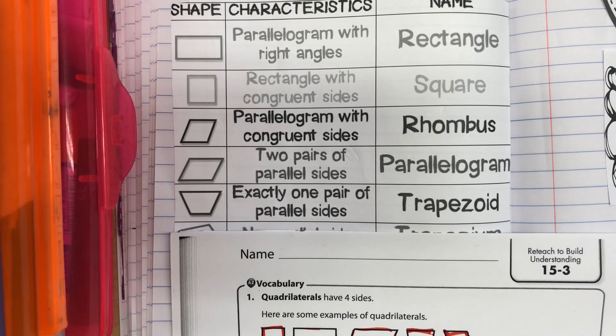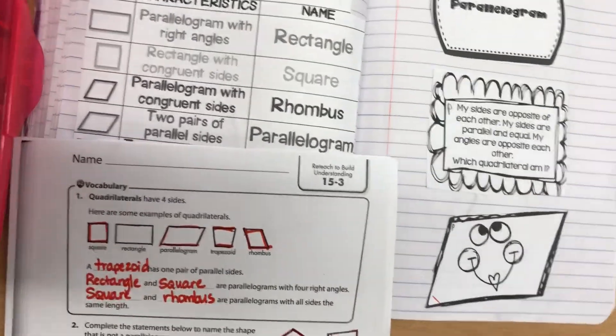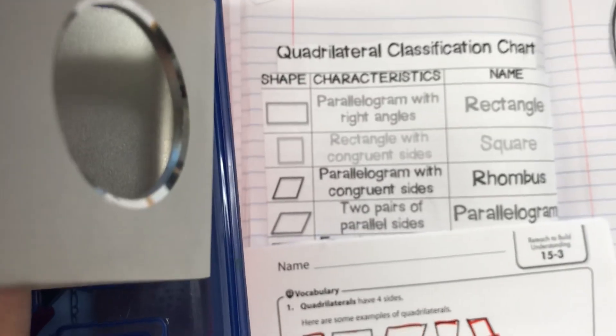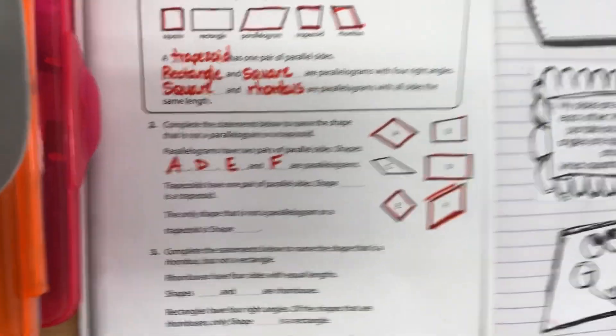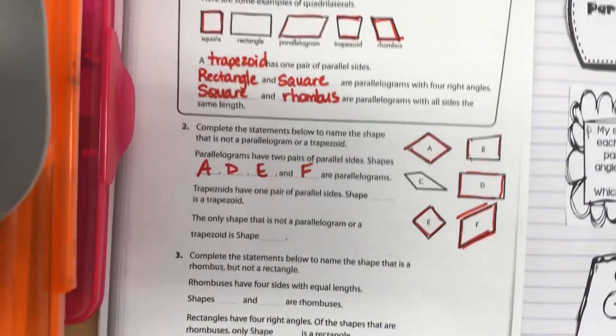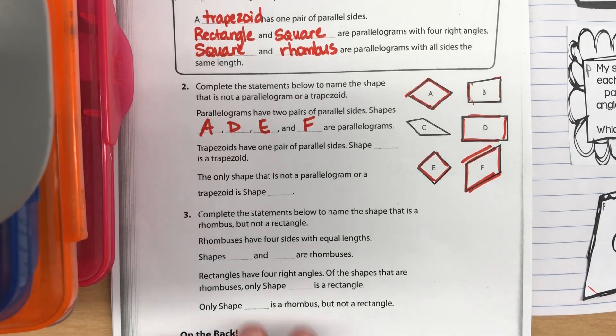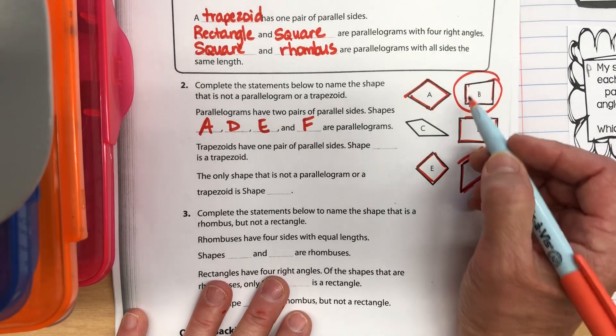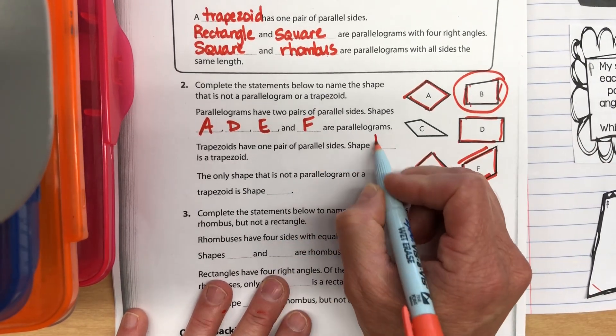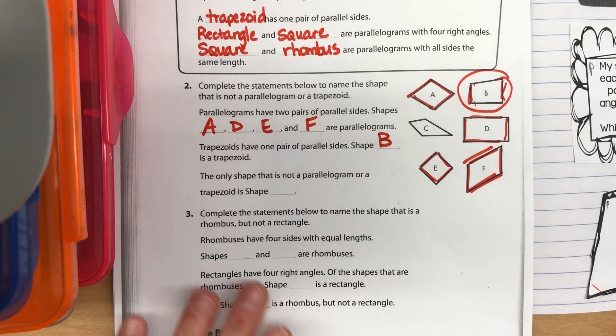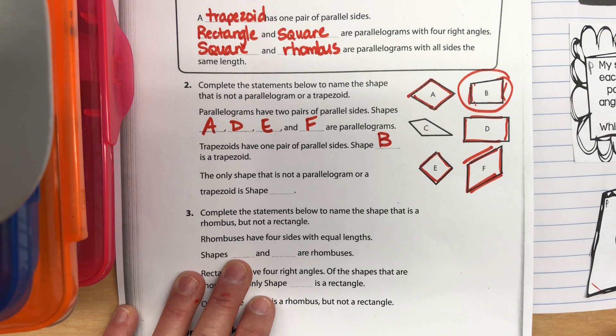Trapezoids have one pair of parallel sides. Shape B has one pair of parallel sides — this top and bottom are parallel, but the sides are not — so shape B is a trapezoid.